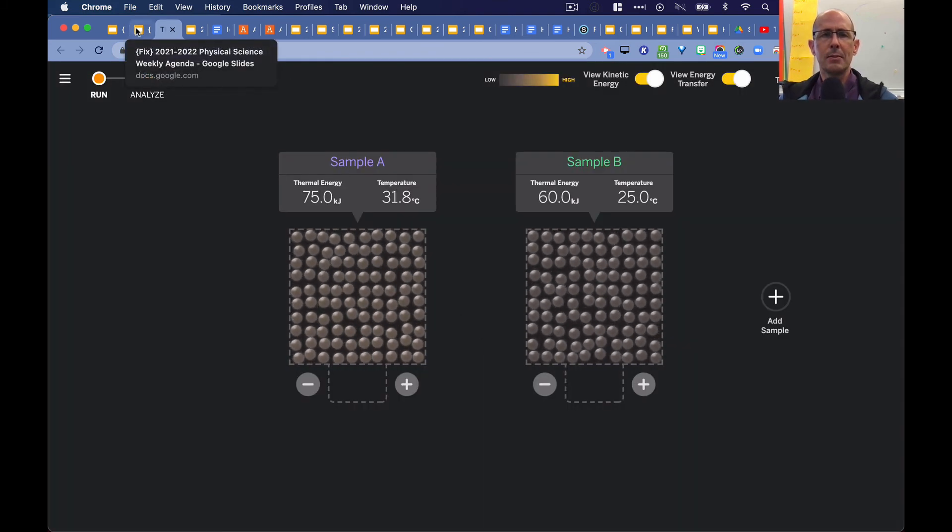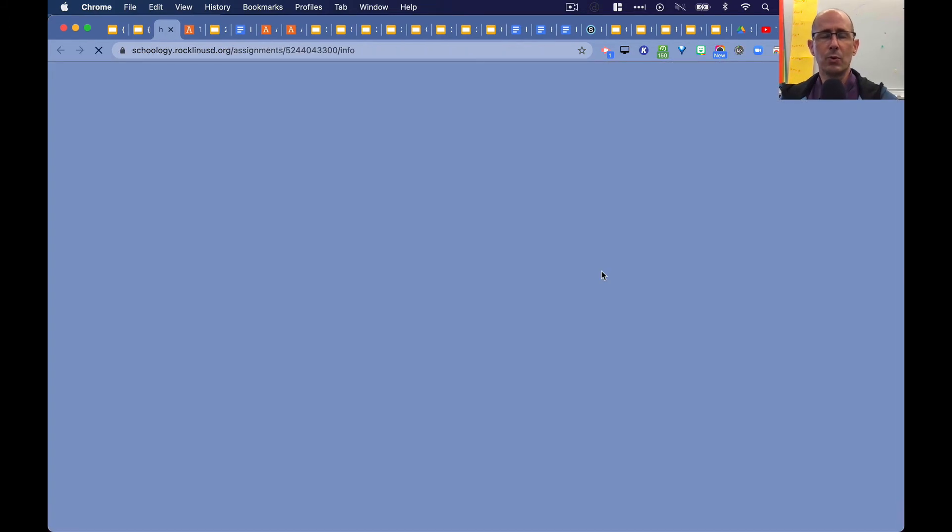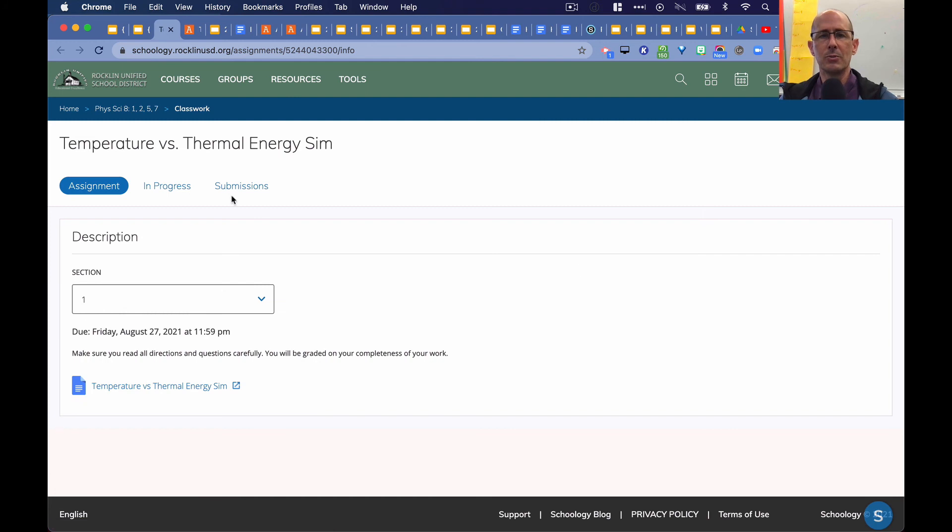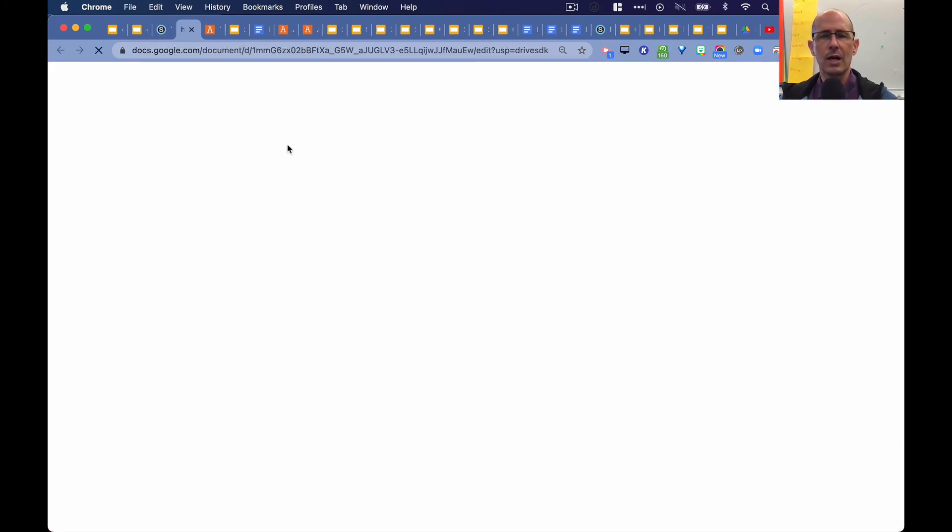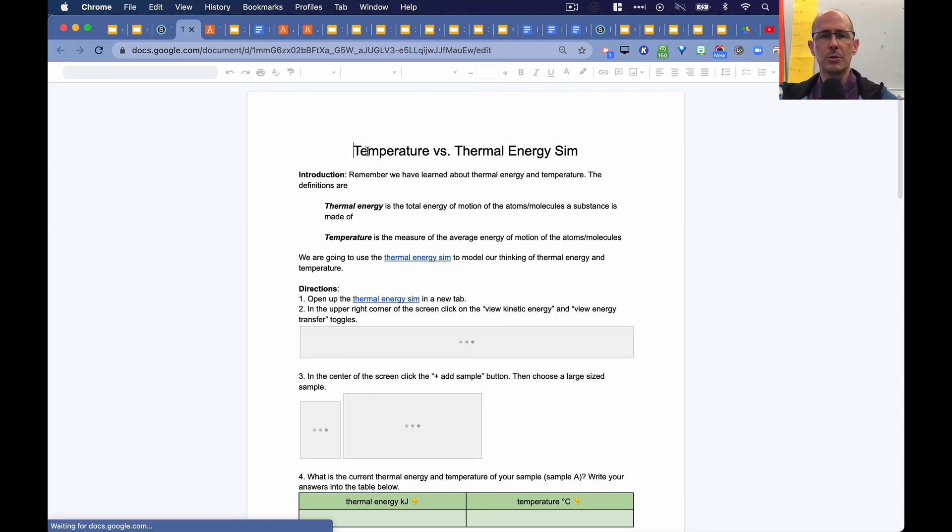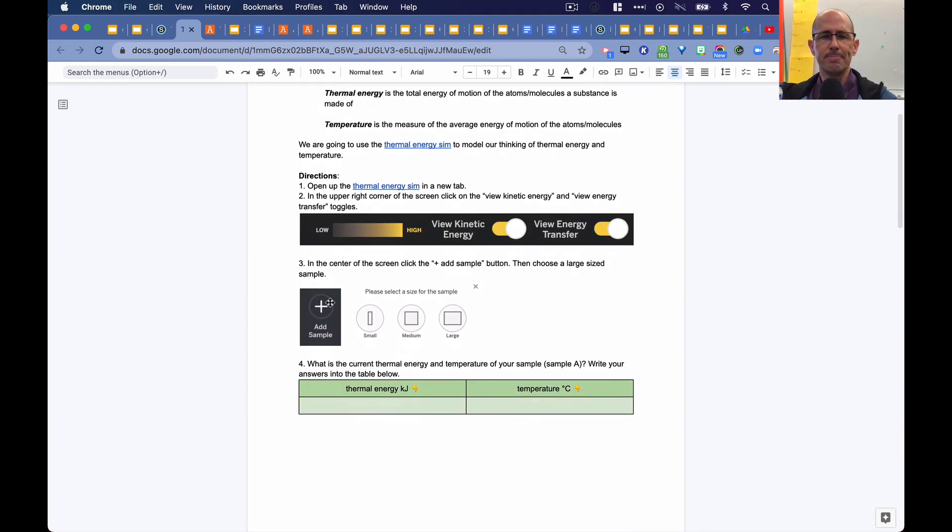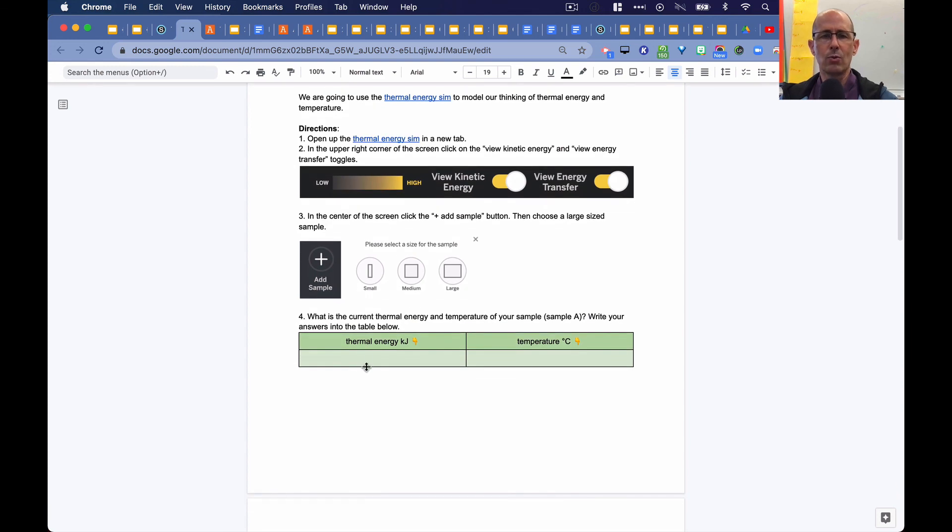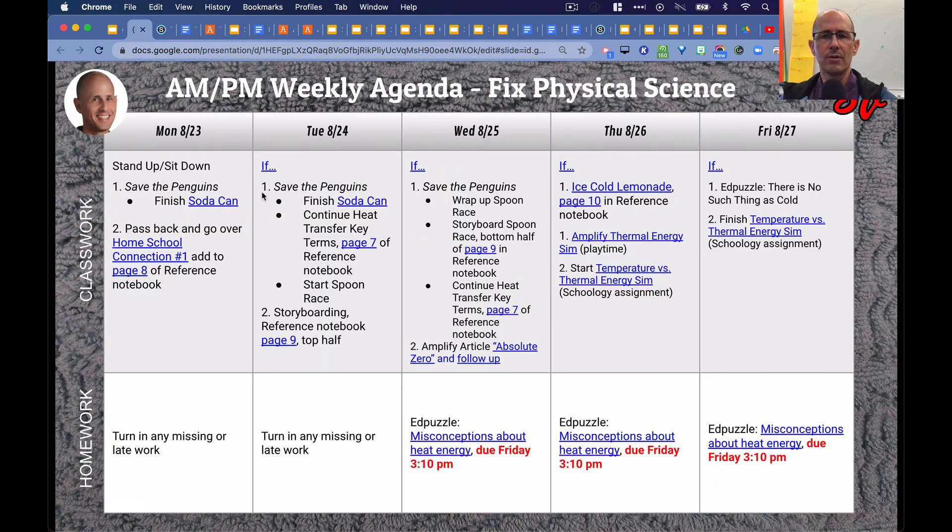And then from there, we expanded what we can do in the Sim. We were more systematic in what we did in our observations. So each student got a copy of the doc, temperature versus thermal energy Sim. So they were given definitions, they were given directions, and then they had to write their responses based on what they observed in the Sim into the green spaces provided. We started that Thursday and we finished that on Friday and turned it in.